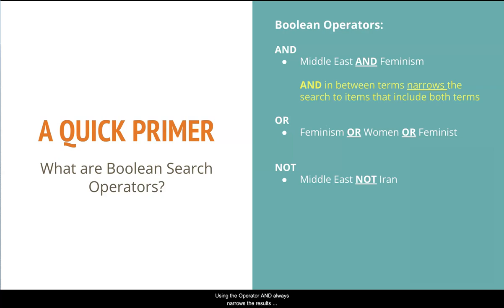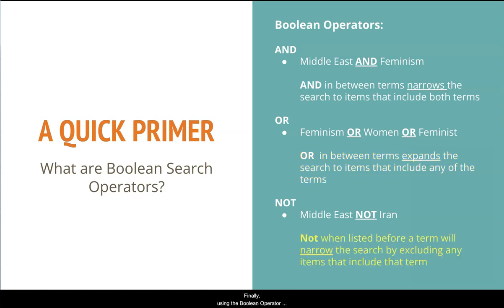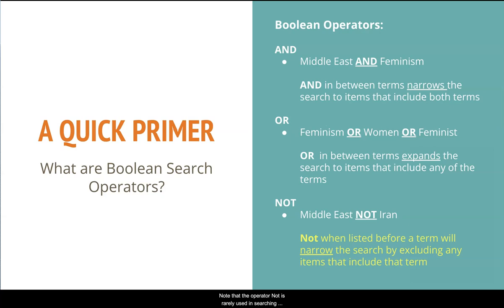Using the Boolean operator OR between two or more terms will tell the database to return items in the results that have any of those terms. This is great for searches where there are many different types of terms that could be used to retrieve information on a topic. Using OR always expands the results since it provides more options for keywords. Finally, using the Boolean operator NOT before a term will tell the database not to include any items in the search results that include that term. This is great for searches where a term may be strongly associated with more than one concept, but only one concept is relevant. Note that NOT is rarely used in searching because it can eliminate relevant results if not used carefully.